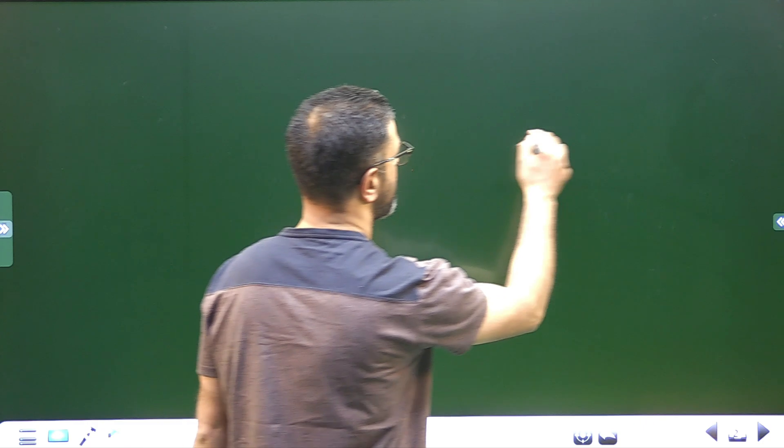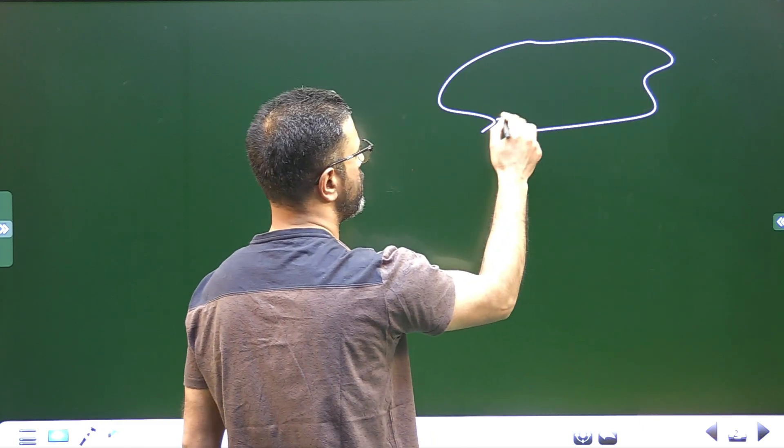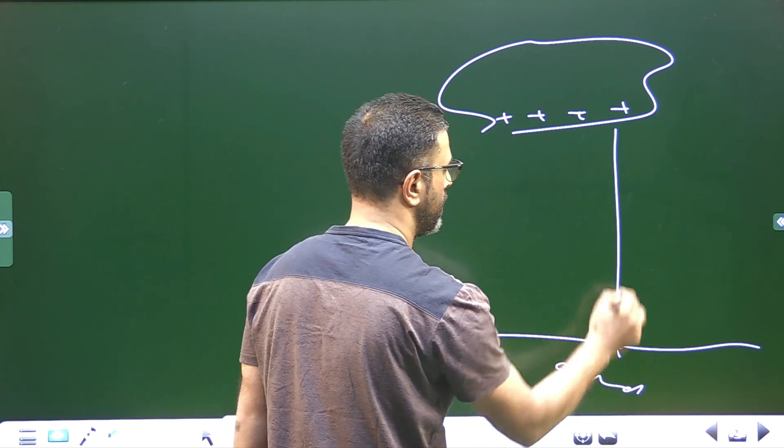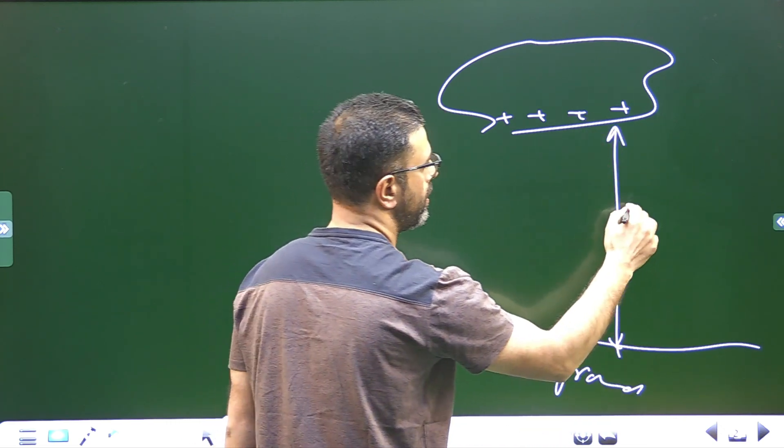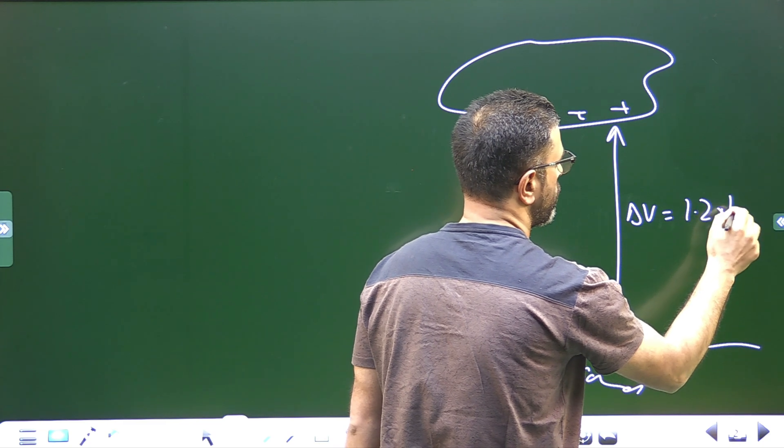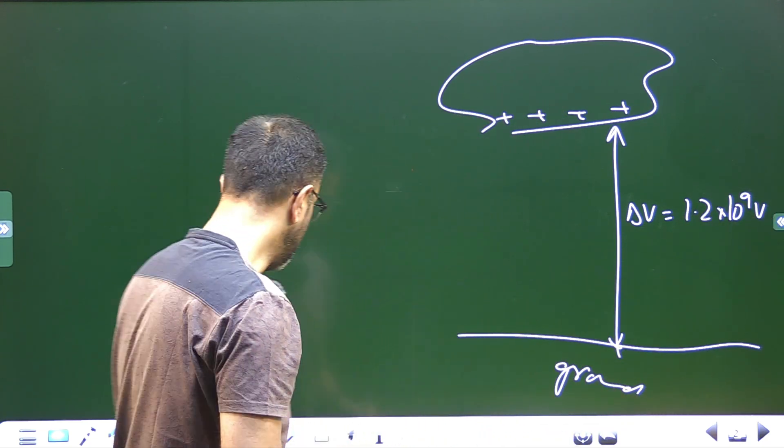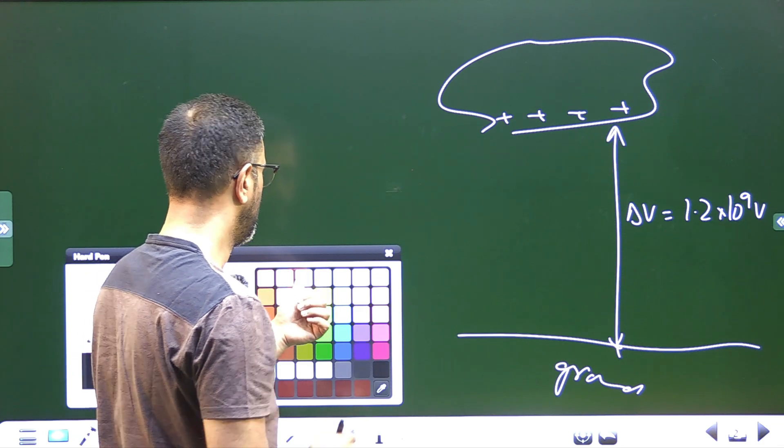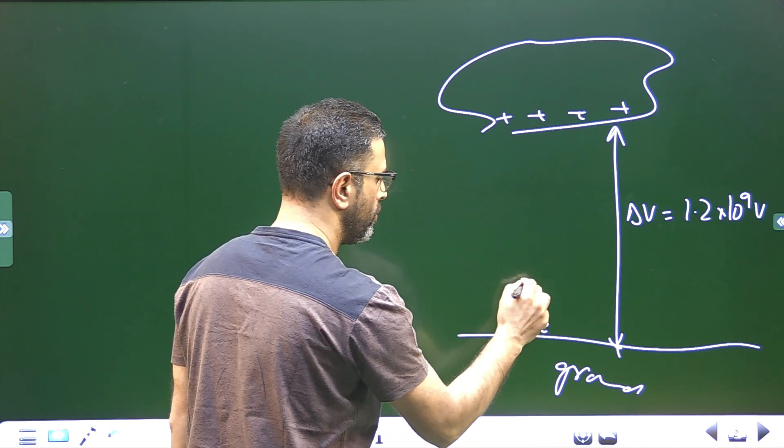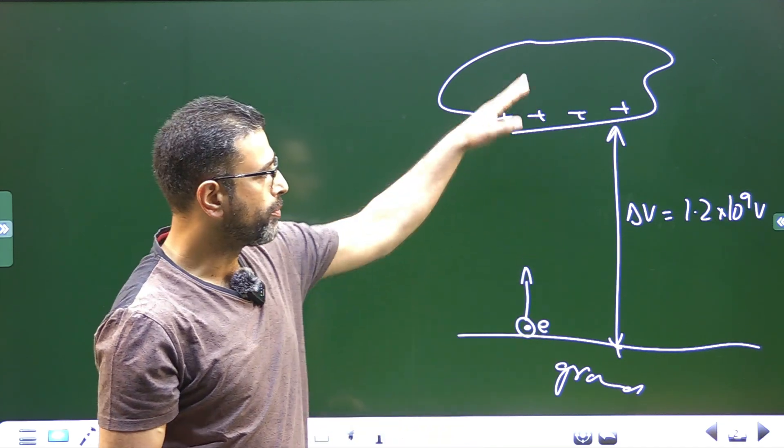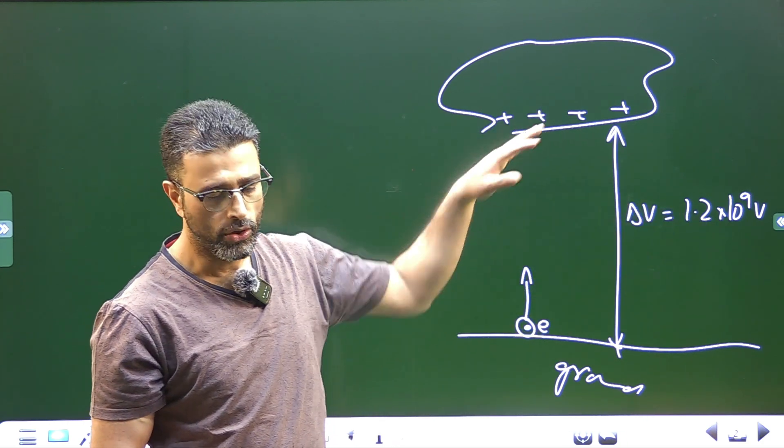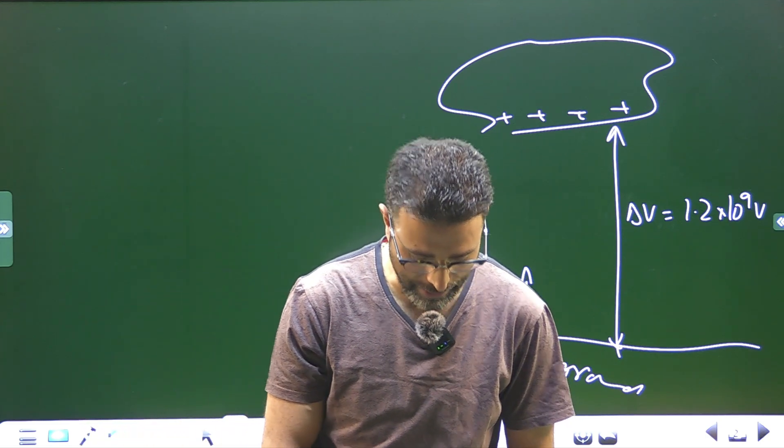So there is some passing cloud which may be charged. This is the ground and there is a potential difference between cloud and the ground which is given by 1.2 into 10 to the power 9 volts. If an electron moves from the cloud to the ground or from the ground to the cloud, it moves through a potential difference of 1.2 into 10 to the power 9 volts. So there will be some change in its energy, and we have to calculate what will be the change in that energy.